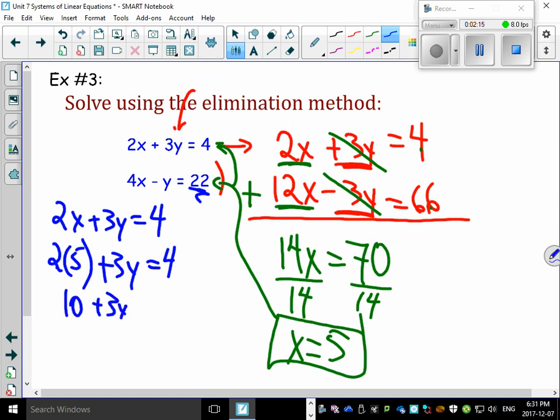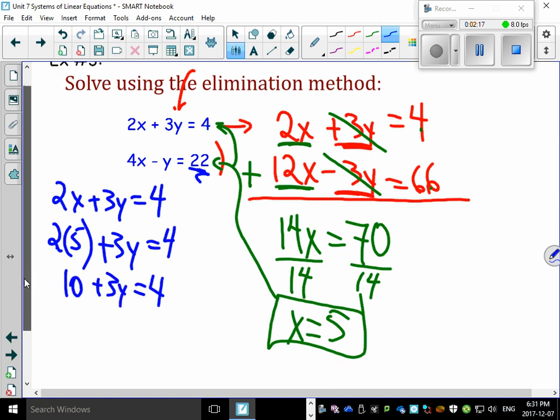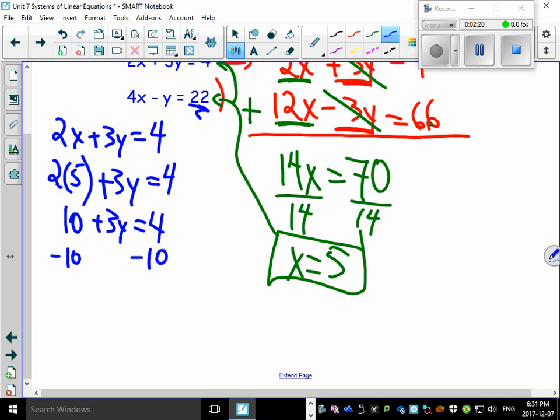Then subtract 10 from both sides, subtract 10 from both sides. You got 3y equals to negative 6. Divide by 3, divide by 3. Y equals to negative 2.